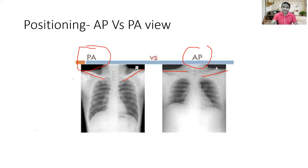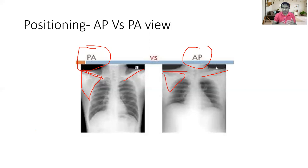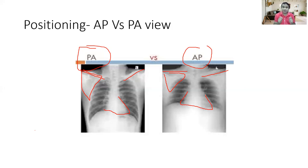The second differentiating structure is the scapula. In the PA view, the scapula lies outside the lung field because of hyperabduction of the scapula, whereas in the AP view, the scapula lies within the lung field. The third structure is the heart shadow — it is usually smaller in the PA view and appears larger in the AP view. It is very difficult to comment upon the cardiac shadow if someone takes the AP view. So three structures to differentiate PA versus AP: clavicle (angular vs. horizontal), scapula (outside vs. within lung field), and cardiac shadow size.